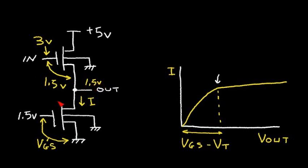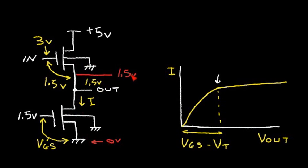I want to point out that there is actually a difference between these two transistors — they are not really identical. The reason is because we have a substrate connection, and we have a source voltage. On the bottom transistor the source voltage is at zero volts, while on the upper transistor the source voltage is at 1.5 volts. That makes a difference: the source of the upper transistor is at a higher voltage than the substrate node — the node that connects to the surface of the wafer — whereas in the bottom transistor the source is at the same voltage as the substrate.